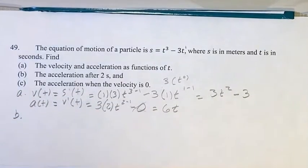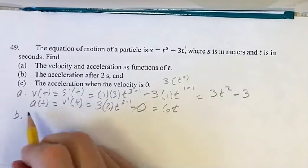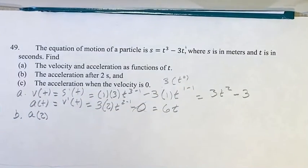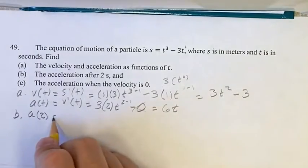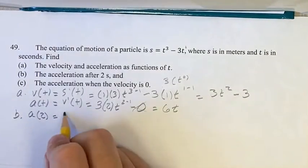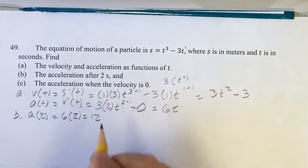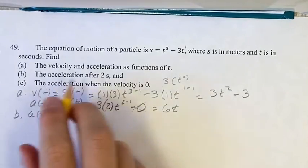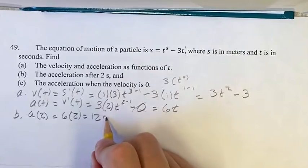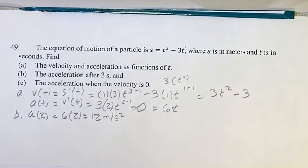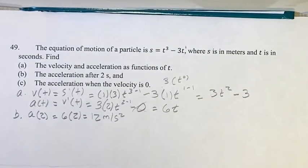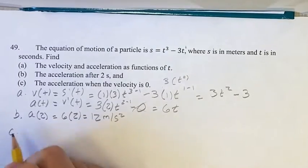So for part b, we're looking to find the acceleration after 2 seconds, so all we have to do is plug in 2 for t, since t is in seconds. Plugging it in to 6t, where we see a t we plug in a 2, so 6 times 2 is 12. So the acceleration after 2 seconds is 12 meters per second squared. That's the unit for acceleration.